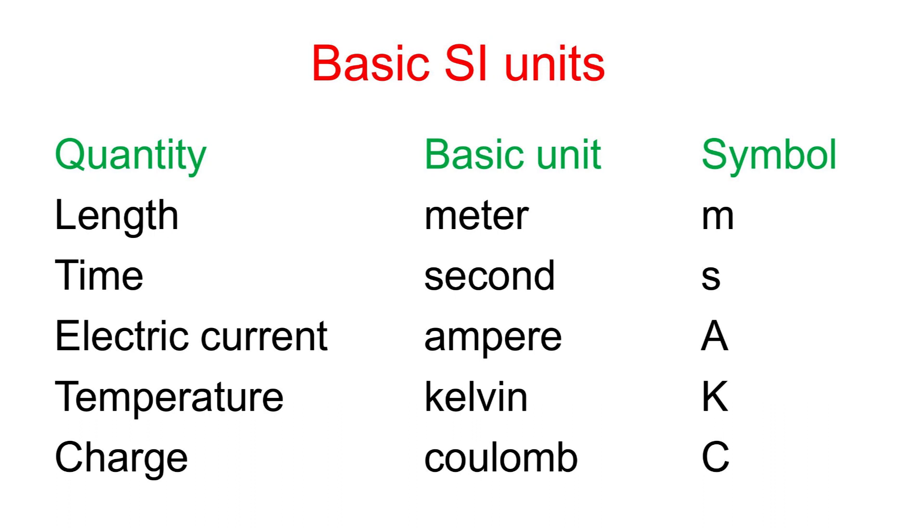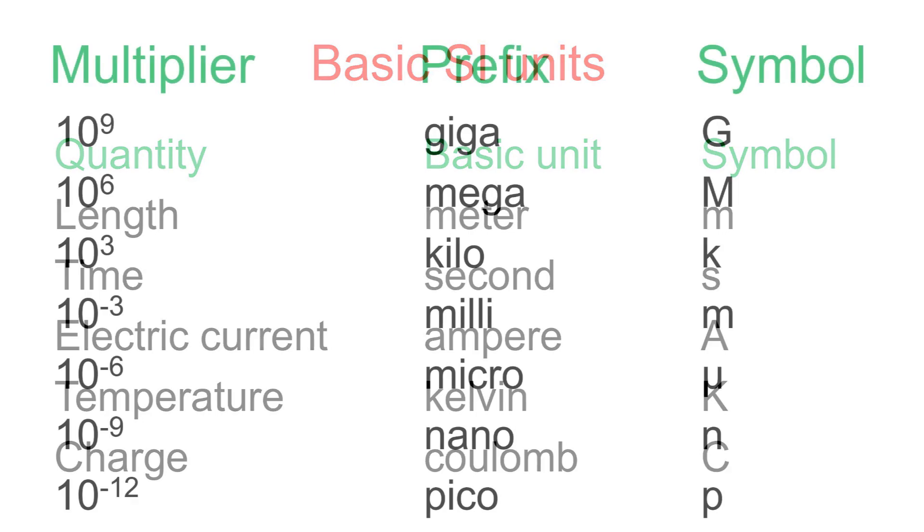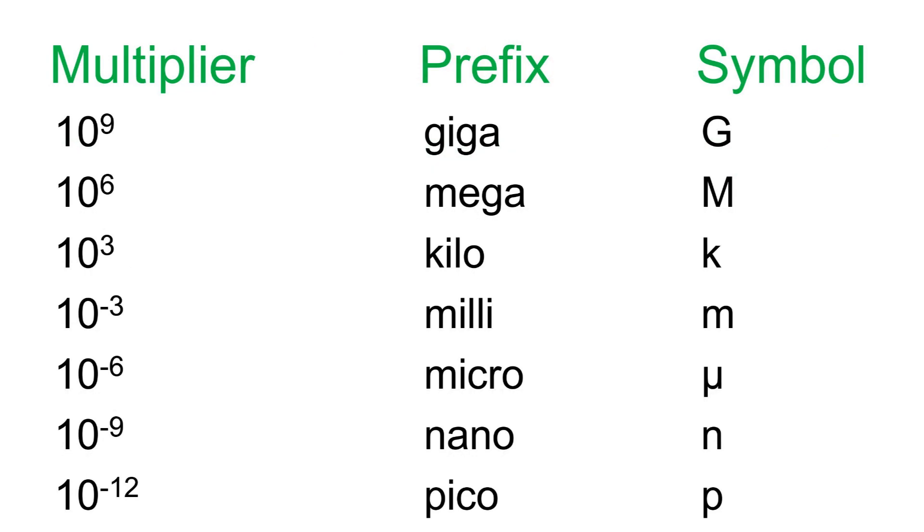Basic SI units: quantity, basic unit, symbol. Length is measured in meters (m), time in seconds (s), electric current in amperes (A). Prefixes include: 10 power 9 is giga (G), 10 power 6 is mega (M), 10 power 3 is kilo (K), 10 power minus 3 is milli (m), 10 power minus 6 is micro.